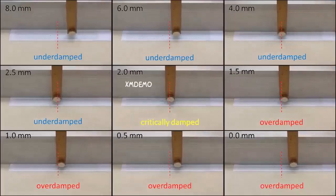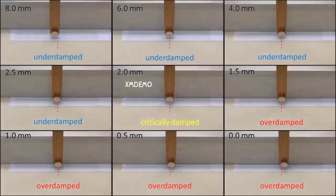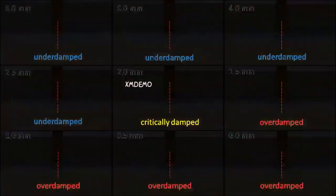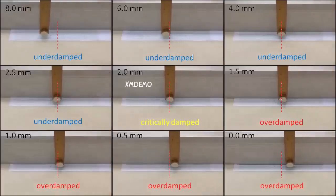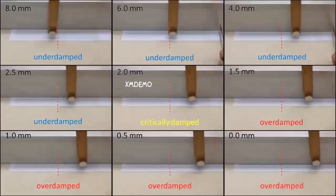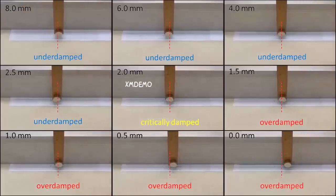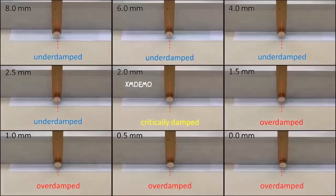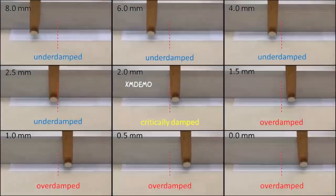So here you see nine oscillations experiencing different degrees of damping. The one at the center is a special one. It's called critical damping. Anything less than that is called under damping, and anything more than that is called over damping.